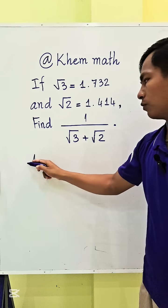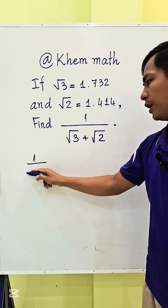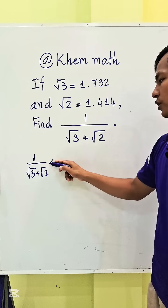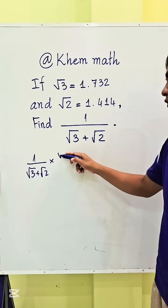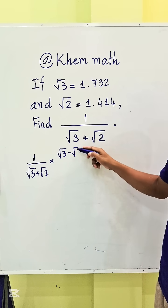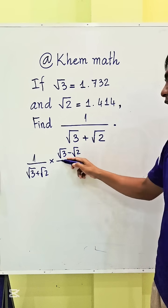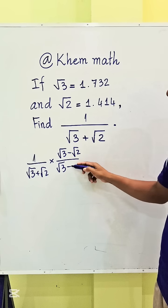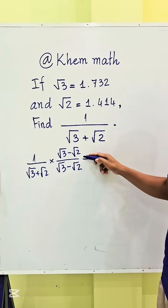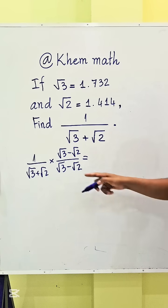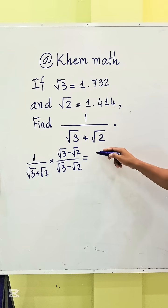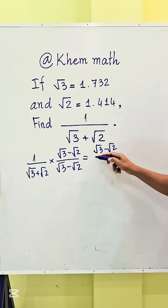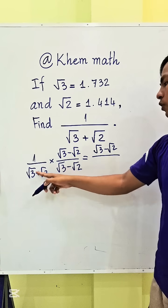So we get 1 divided by (square root 3 plus square root 2), times (square root 3 minus square root 2) over (square root 3 minus square root 2). The numerator becomes 1 times (square root 3 minus square root 2), which gives us square root 3 minus square root 2.